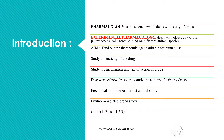The aim of experimental pharmacology is to find out a therapeutic agent suitable for human use. We can study the toxicity of drugs, know the mechanism of action and site of action of a particular drug, and discover new drugs or find the actions of various already existing drugs. Any drug to be tested first, before human use, is tested on animals.